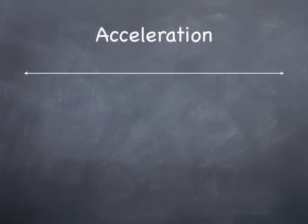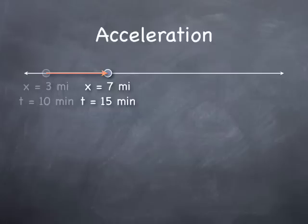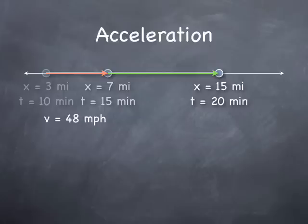Acceleration is a bit more complicated. Here we are at the 3-mile marker after 10 minutes, at the 7-mile marker after 15 minutes, and at the 15-mile marker after 20 minutes. The average velocity of the initial leg of our journey, the orange arrow, is 48 miles per hour, as we just calculated.